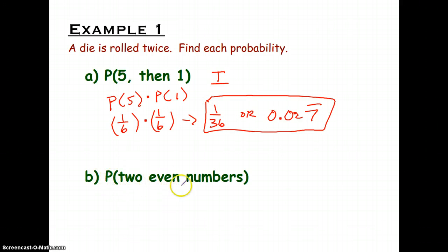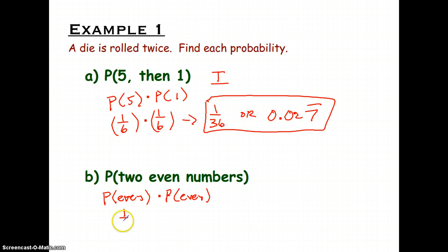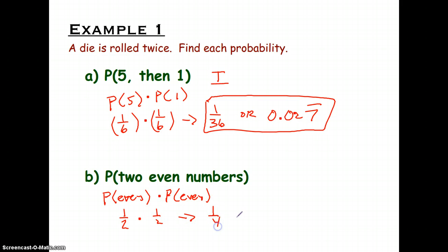The next example: we want the probability of rolling two even numbers. The probability of rolling an even number first is 1/2 — half the numbers are even, or 3 out of 6. The probability of it being even again is also 1/2. So the probability is 1/4 or 0.25. Either one works; both are acceptable answers.